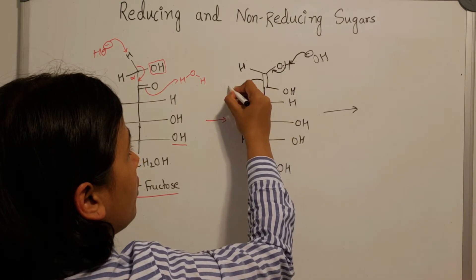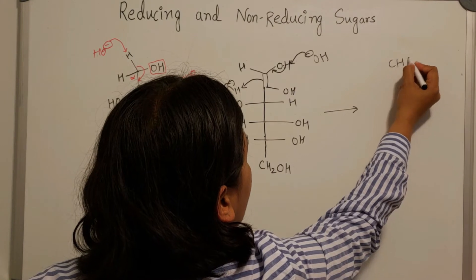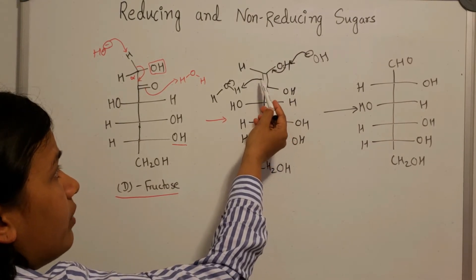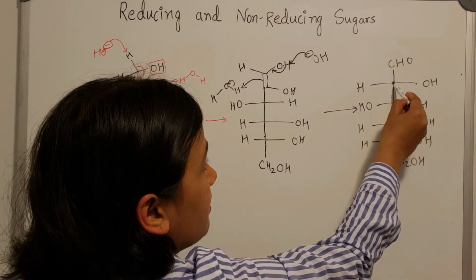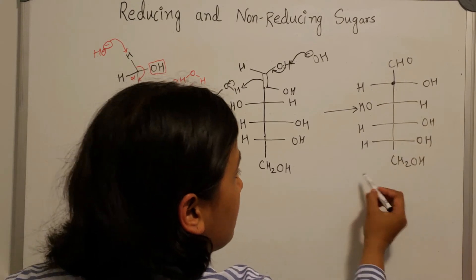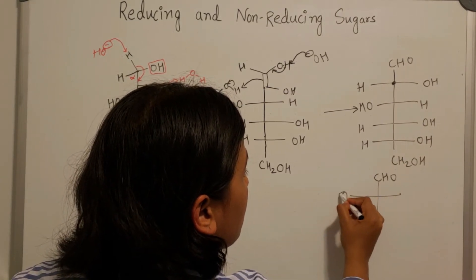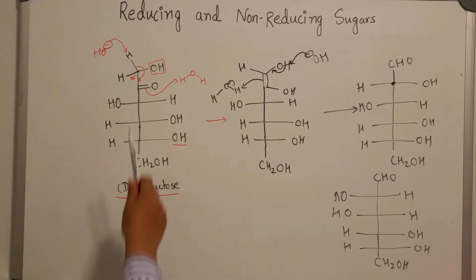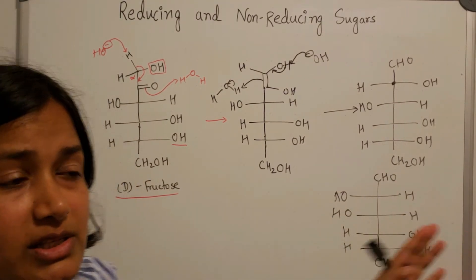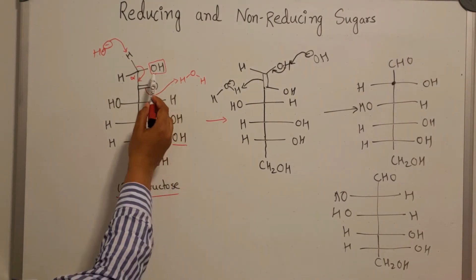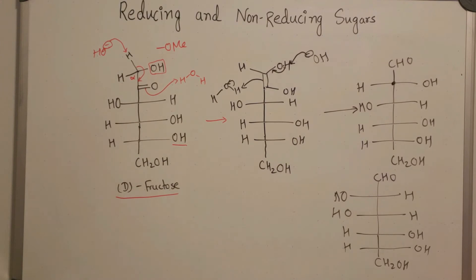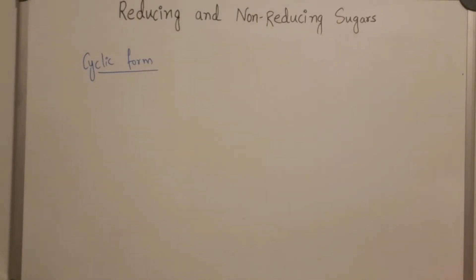Then there is a second keto-enol tautomerism: hydroxide again grabs a proton and accepts a proton from another molecule of water, resulting in the formation of an aldose sugar. Because this is an sp2 center, the proton can come from either the top or bottom side, giving a mixture of epimers. So via two subsequent enol-keto tautomerisms, this alpha-hydroxy ketone is converted into an aldose sugar, which then responds positively to the Tollens test. It is crucial that the hydroxy group must be free — had it been protected as an O-methyl ether, the second keto-enol tautomerization would not have been possible.